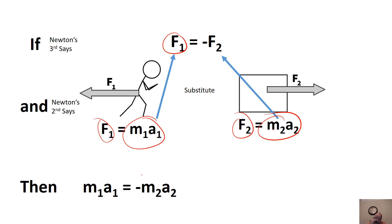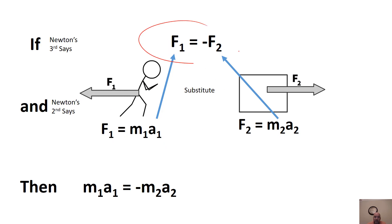So if a problem gives you masses and accelerations instead of forces, you can use M1·A1 = −M2·A2 to solve for unknowns related to two objects and their equal and opposite forces.